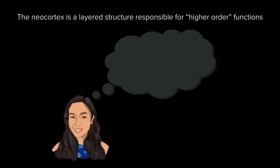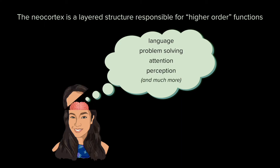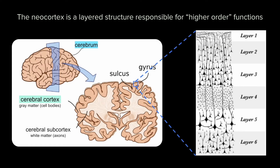Many of the remarkable higher-order cognitive abilities thought to be unique to humans, such as language and advanced problem-solving, along with other abilities such as attention and perception, can be functionally localized to the neocortex. The neocortex is the most recent part of the cerebral cortex to evolve and has a six-layer structure, with each layer distinguished by its cell types and patterns of connections to other layers.